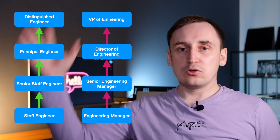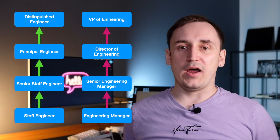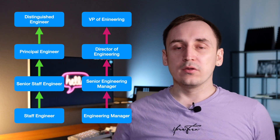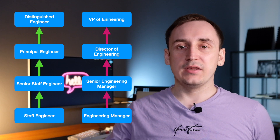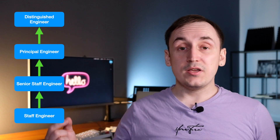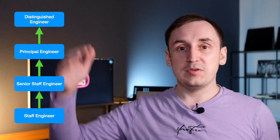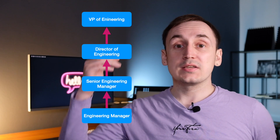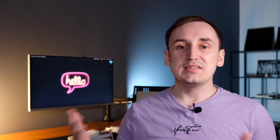So now we have these two tracks: the individual contributor track and the management track. The starting title on the IC track is usually staff engineer or lead engineer, while on the management track it's engineering manager. If you continue on the IC path, you can have titles like senior staff engineer, principal engineer, senior principal engineer, maybe fellow engineer or distinguished engineer. As a manager, you can see titles like senior engineering manager, director of engineering, senior director of engineering, VP of engineering, etc. Depending on the company, there might be more or fewer levels — that depends on company scale and how granular they want to be with their titles.